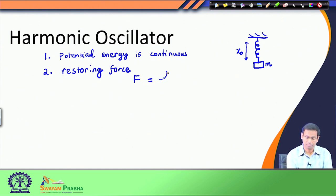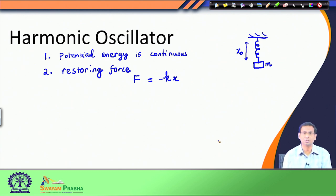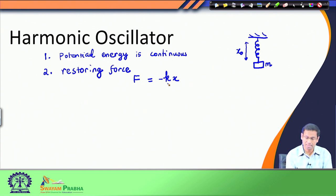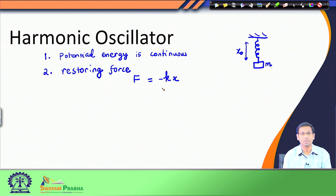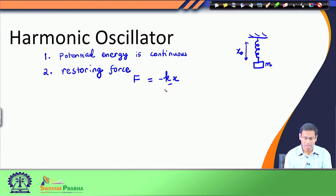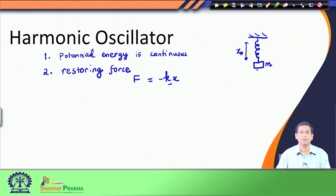I can write this equation with a minus sign multiplied by x — the dimension along which I am stretching or shrinking the spring. This minus x suggests that the restoring force is in the opposite direction to the displacement, and k is the force constant, also called the spring constant. Depending on the stiffness of the spring, the value of k changes. This restoring force makes the system a harmonic oscillator.